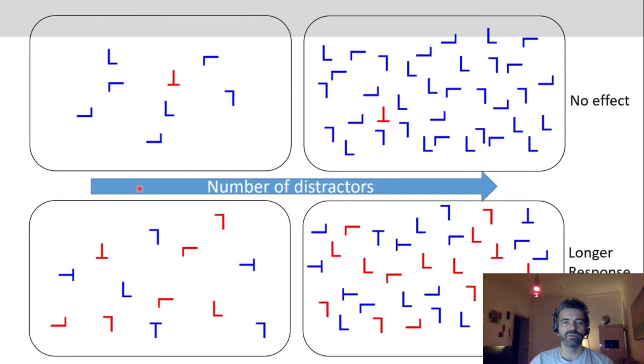So if you increase the number of distractors search could be more difficult because it's just more to look at, more distractors to reject. But actually here there's usually no effect found when all the distractors had the same color and that is a different color from the target. But if there were also distractors that had the same color as the target then the performance becomes much worse, longer response times if you add distractors.